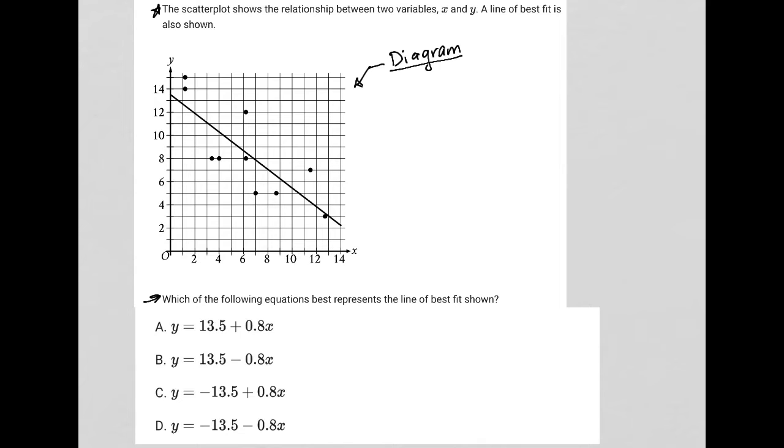Anytime I'm finding the equation for a line, I need to think about using the slope-intercept equation, y equals mx plus b, where m represents the slope and b represents the y-intercept.